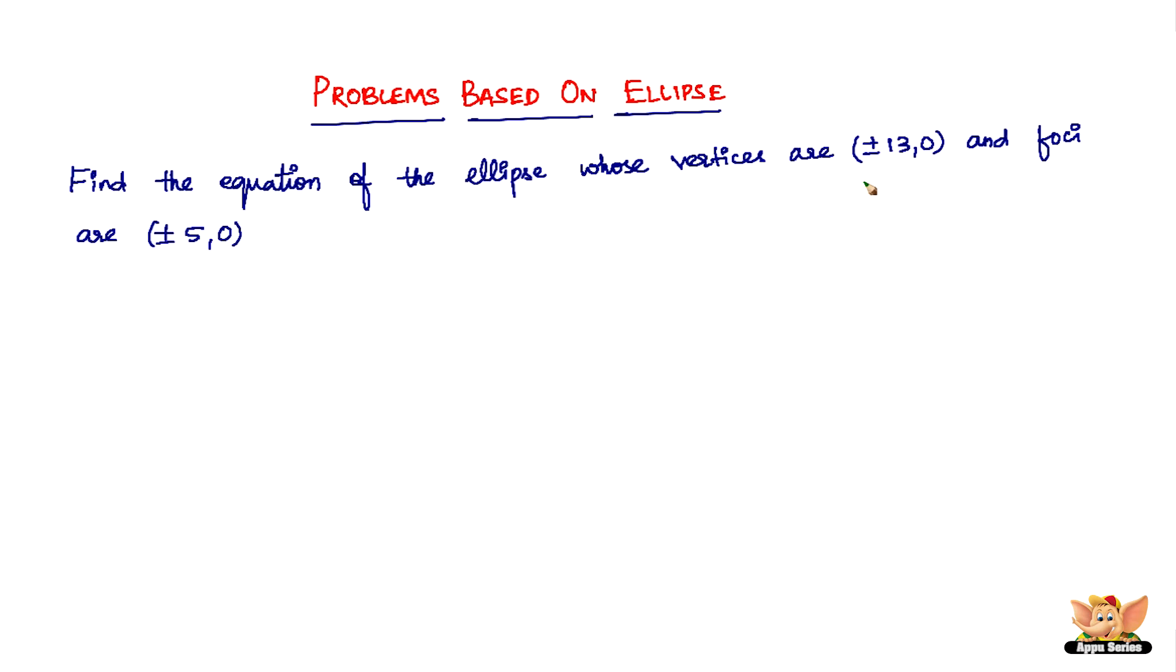This shouldn't be read as plus or minus, it's actually plus and minus - you need to split it like (-13,0) and (13,0), and foci will be (-5,0) and (5,0).